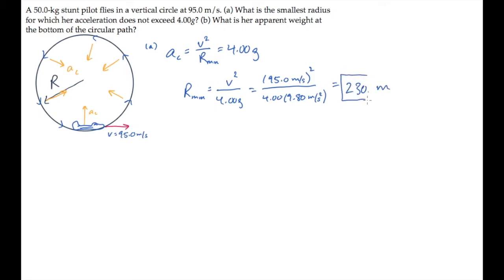Part b asks us for the pilot's apparent weight at the bottom of the circular path. We'll start solving this by drawing a free-body diagram. There are two forces acting on the pilot: her weight, mg, and the normal force, which is the force that her seat exerts on her. And that is her apparent weight. It's how heavy she feels.